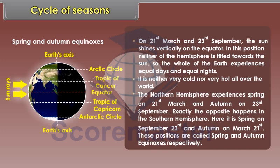Exactly the opposite happens in the Southern Hemisphere. Here, it is Spring on September 23rd and Autumn on March 21st. These positions are called Spring and Autumn Equinoxes respectively.